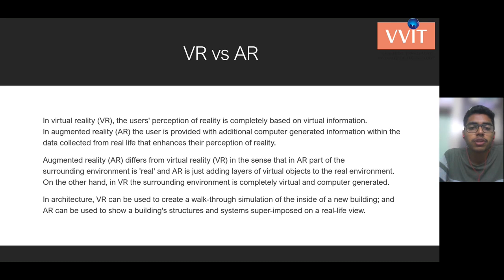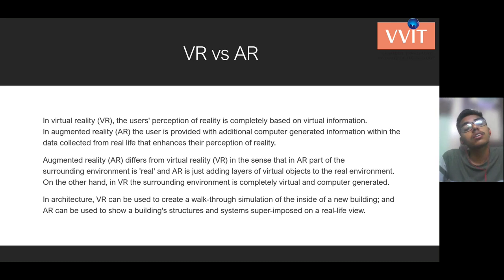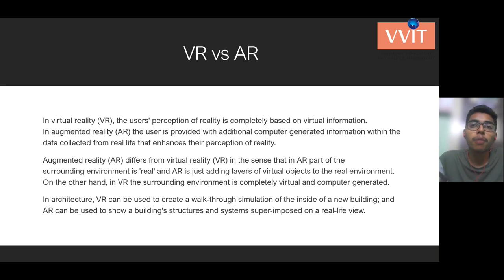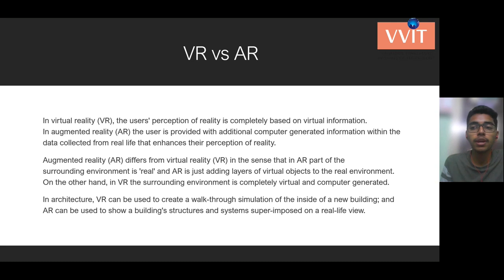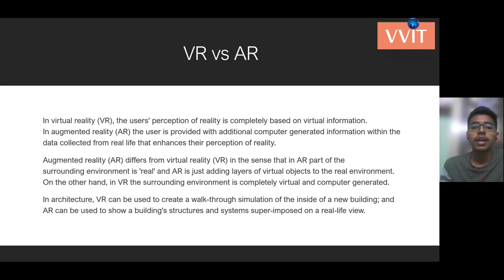Augmented reality differs from virtual reality in the sense that in AR, part of the surrounding environment is real, and AR is just adding layers of virtual objects to the real environment. On the other hand, VR's surrounding environment is completely virtual and computer-generated. A famous example in architecture: VR can be used to create a walkthrough simulation of the inside of a new building, allowing one to feel as if they've entered the newly constructed building and experience its interiors. AR, on the other hand, superimposes systems on a real-life view, useful for engineers in planning building construction. This is the main difference between VR and AR.